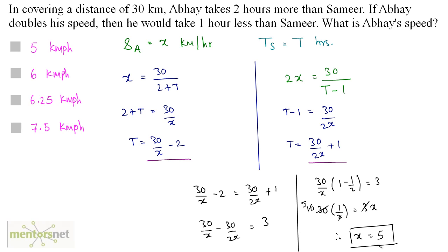Solving gives x equals 5. Since x is the speed of Abhay, the speed of Abhay is 5 km/h.